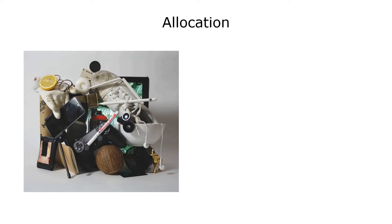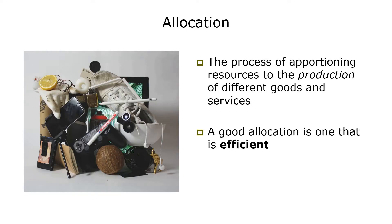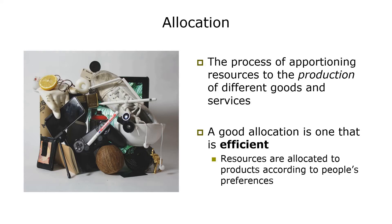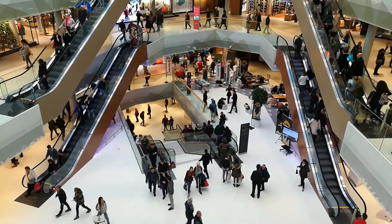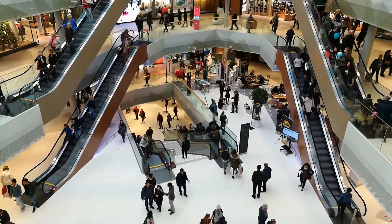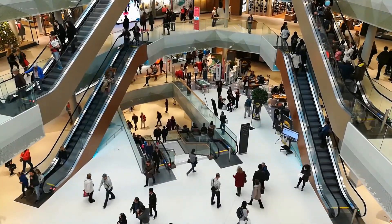Let's start with allocation. Allocation is the process of apportioning resources to the production of different goods and services — so what materials, energy, or human labor go into the production of cars versus shoes, iPhones, Game of Thrones, etc. A good allocation is one that is efficient, and within economics, efficient means that resources are allocated to products according to people's preferences. An efficient allocation is one that best satisfies individual wants weighted by the individual's ability to pay — that is, by their income and wealth. Allocative efficiency is achieved when we put scarce resources to the use that generates the most monetary value, as this is taken to be a measure of utility.